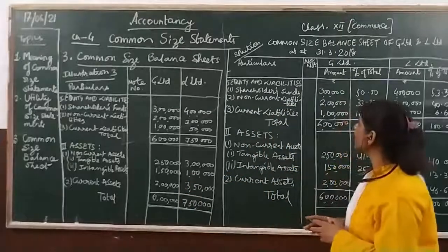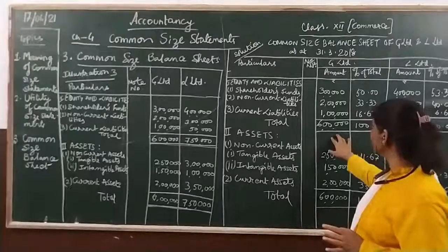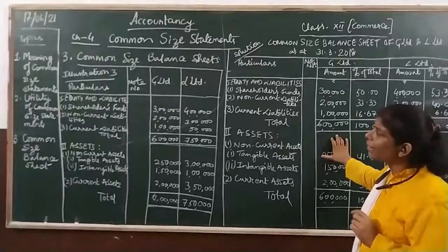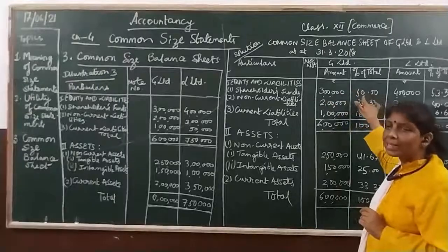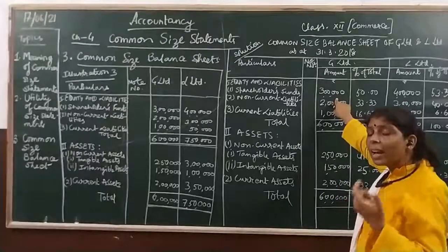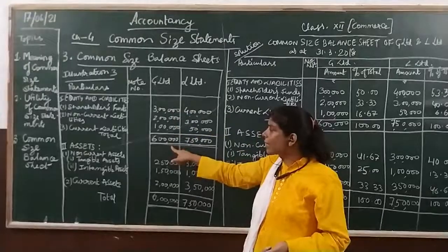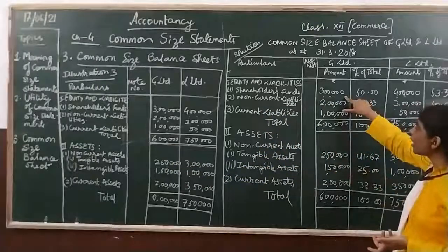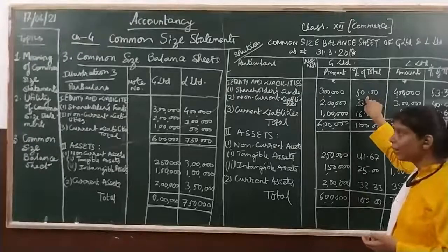We don't need the change column here — we just copy the format and calculate percentages. For shareholders' funds of G Limited, the absolute figure is 3 lakhs. We compare 3 lakhs to total assets of 6 lakhs. So 3 lakhs is 50% of 6 lakhs. The percentage column shows 50%.